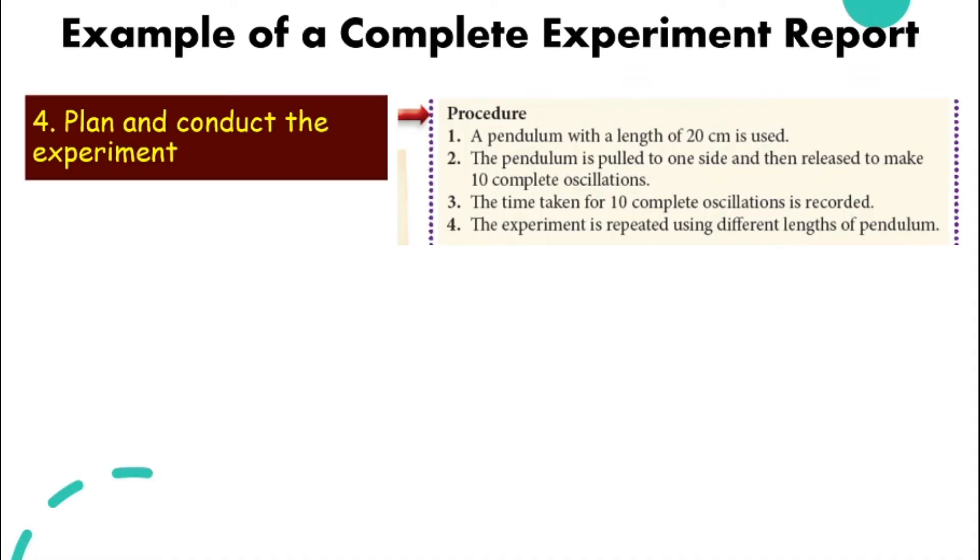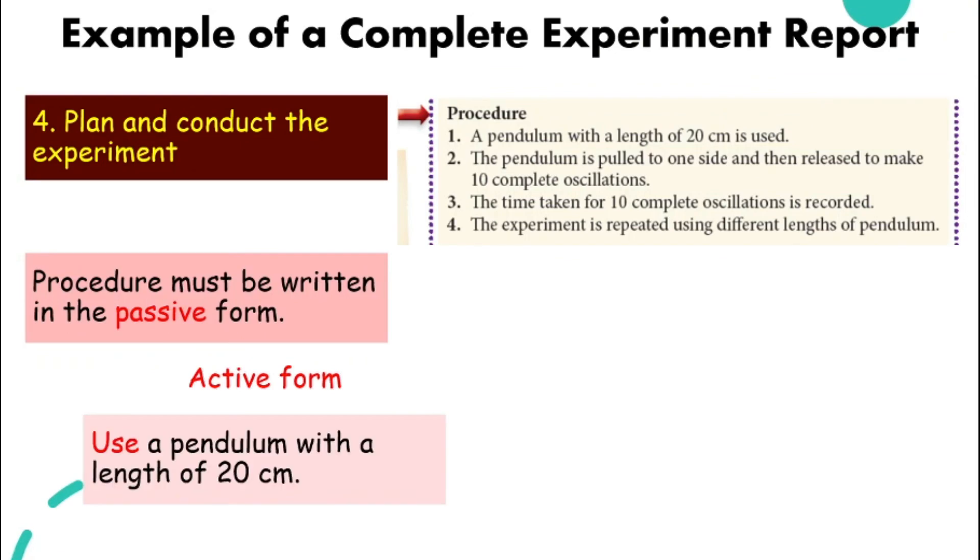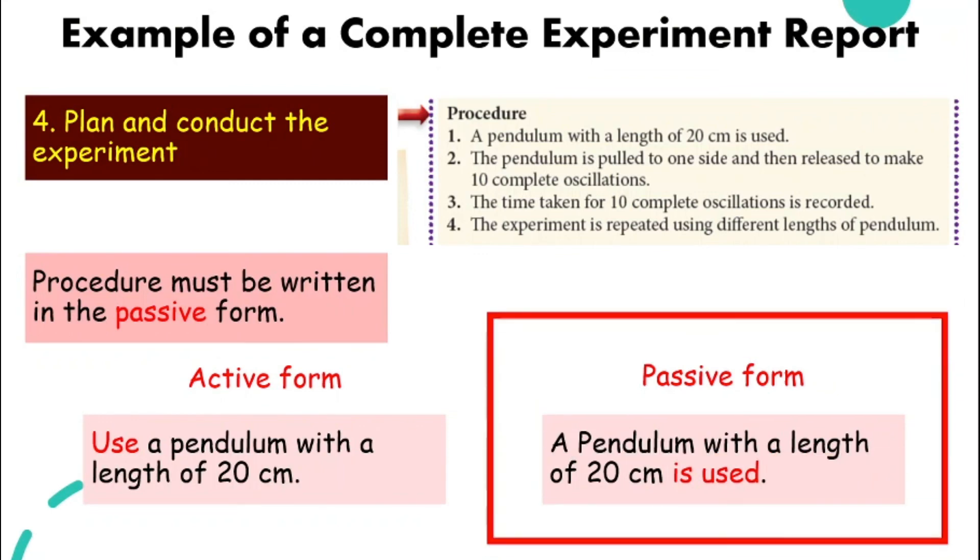When we go to the step of planning and conducting the experiment, we need to write down the procedure. For procedure, I need you to pay attention here: procedure must be written in passive form. This is an active form sentence: use a pendulum with a length of 20 cm. For a passive form sentence, it will sound something like this: a pendulum with a length of 20 cm is used. For experiment, we need to use this type of sentence.